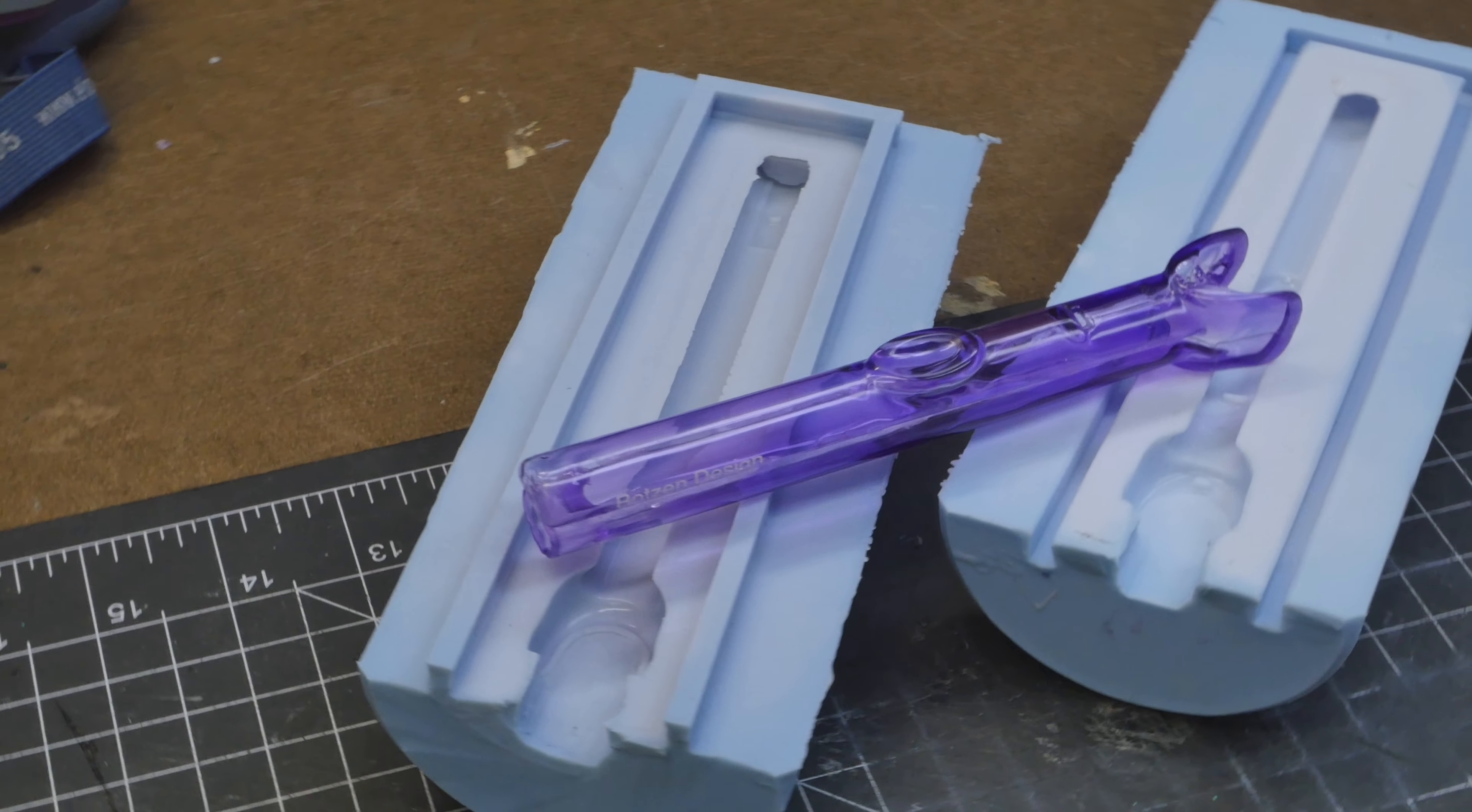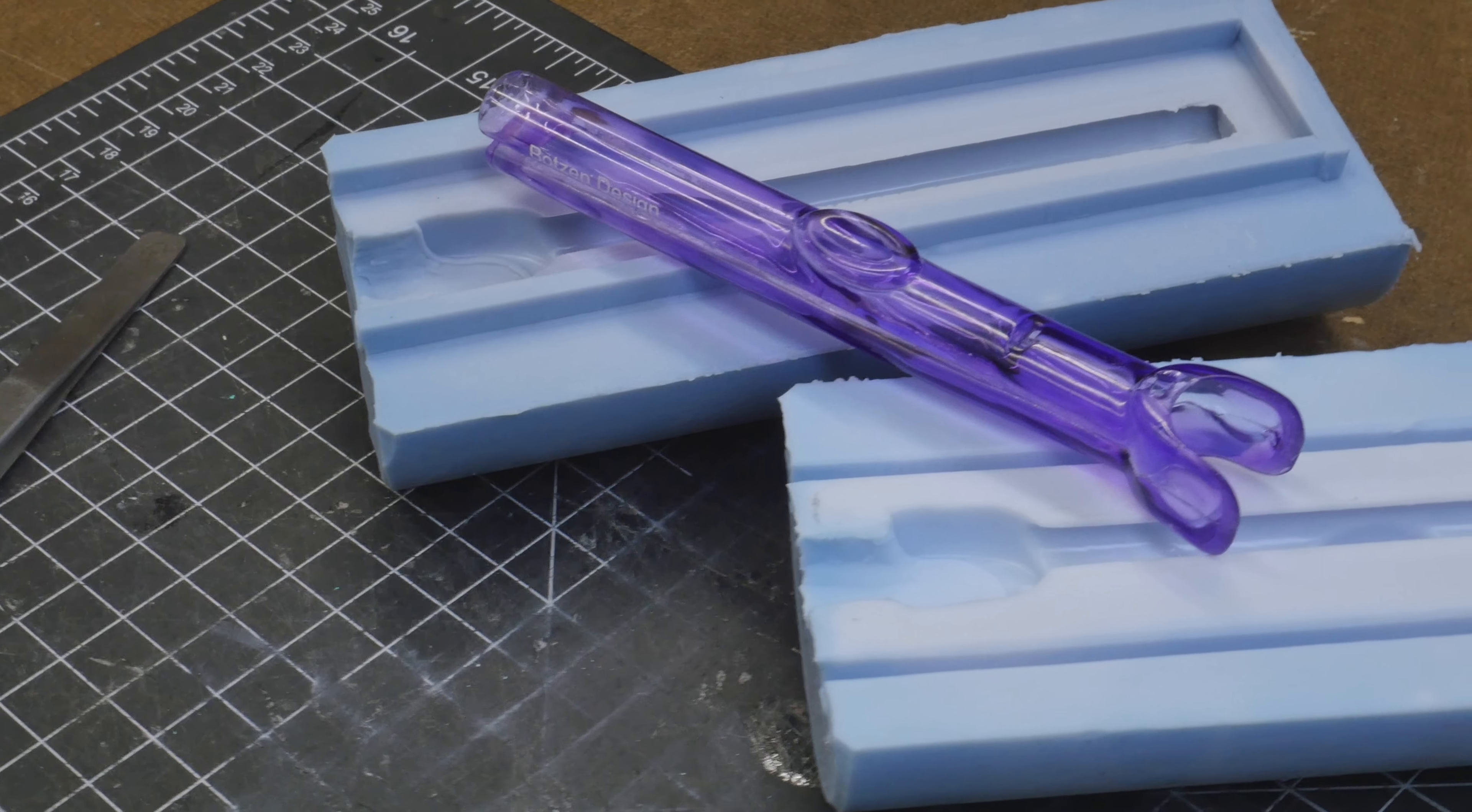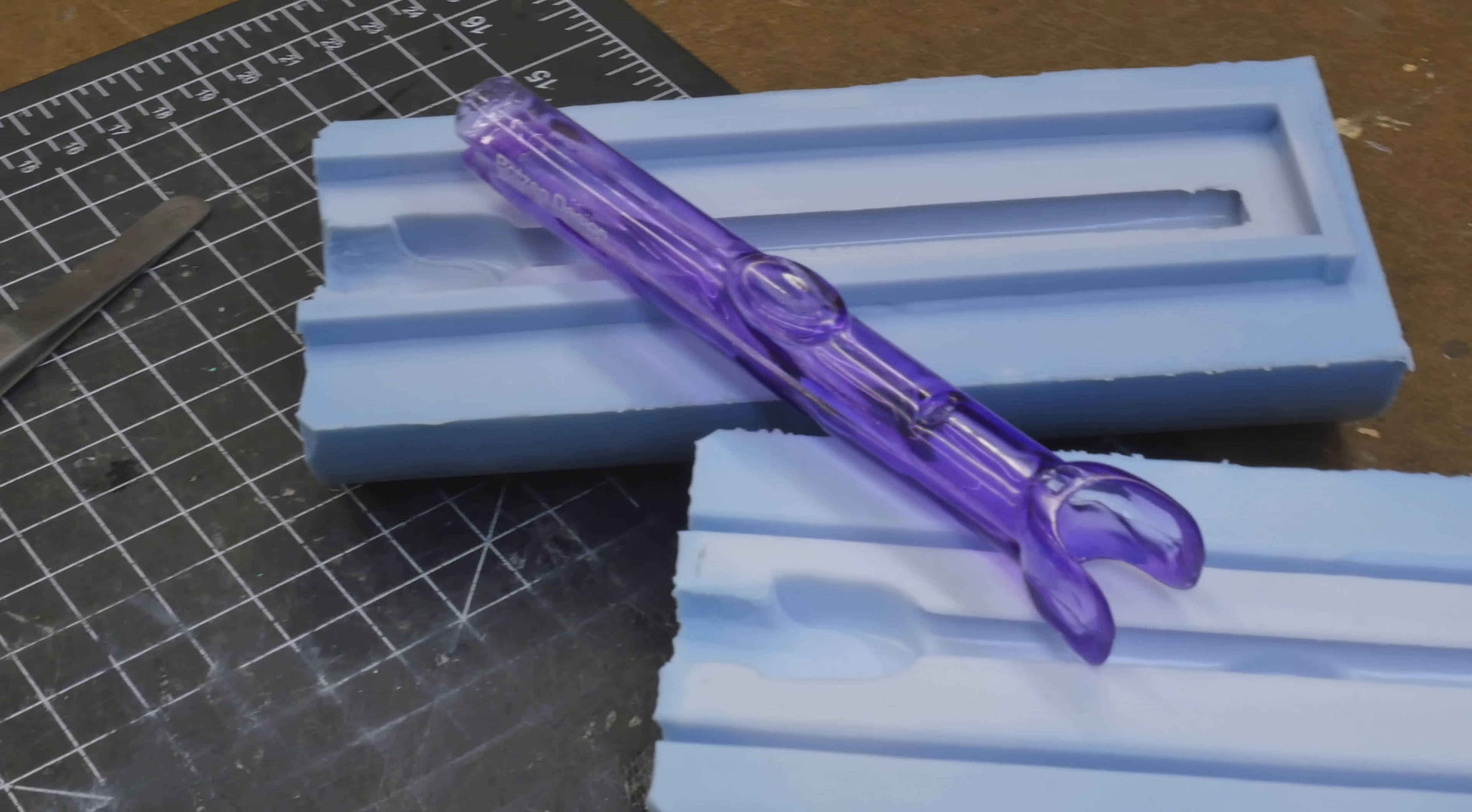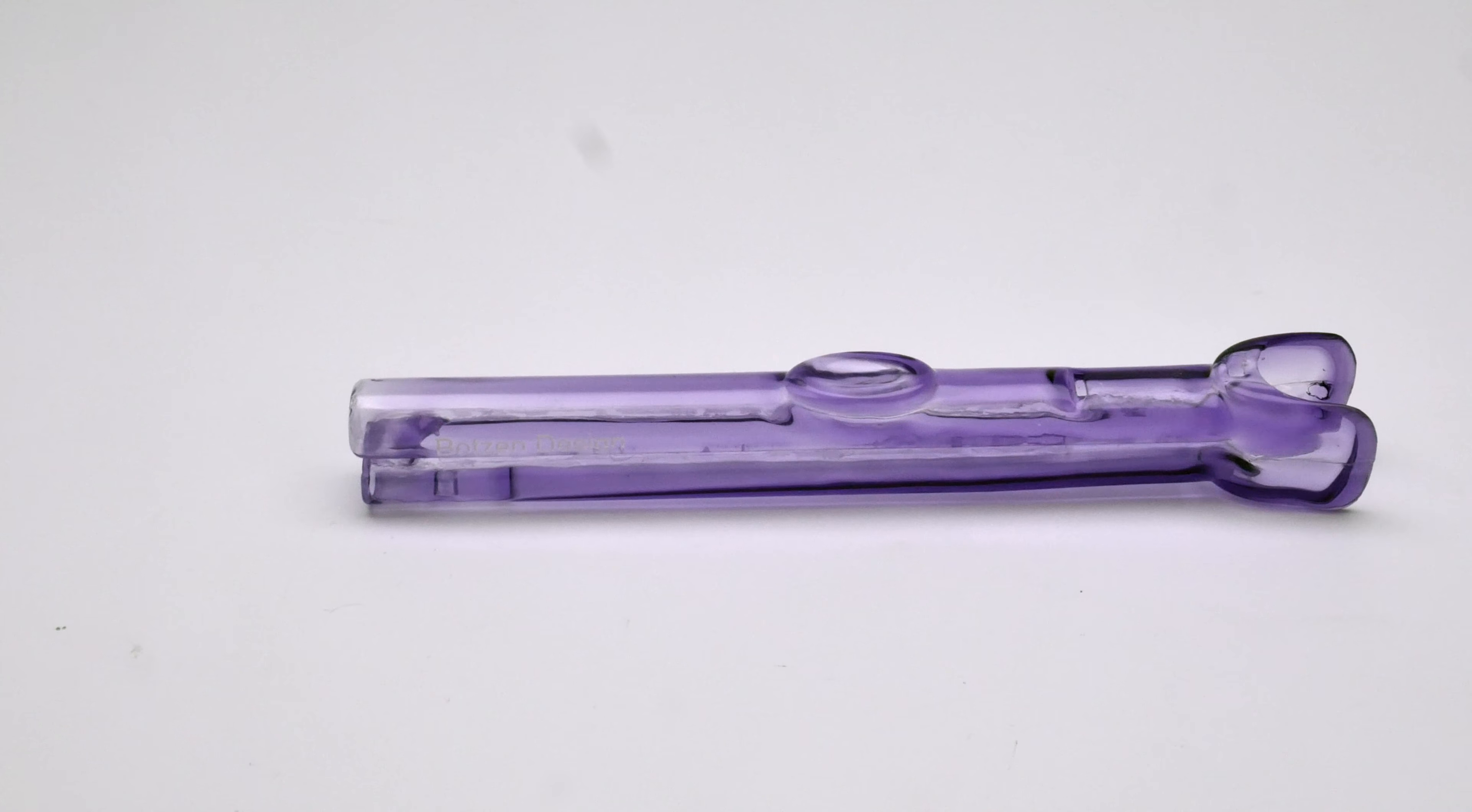Sometimes when you're making mock-ups and prototypes, there are special situations that pop up. In this case, I need to simulate a blow molded part, and I'm going to slip cast that in resin, and I'm going to show you how I do that.